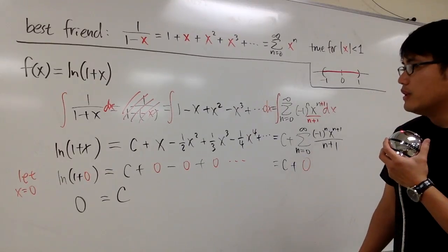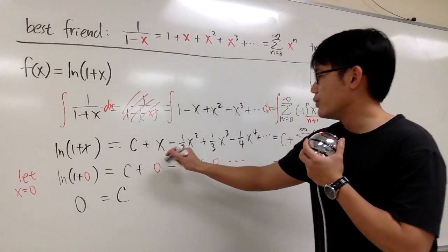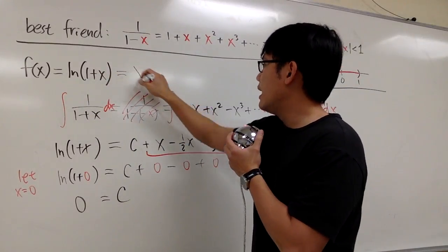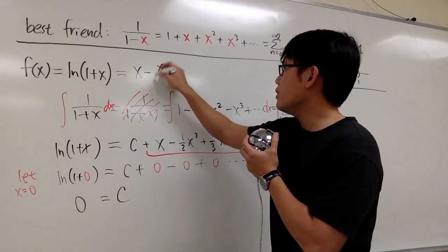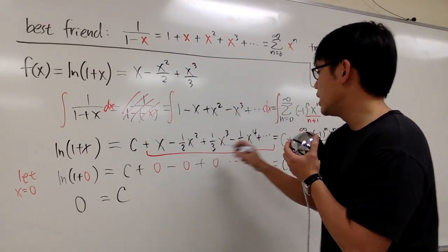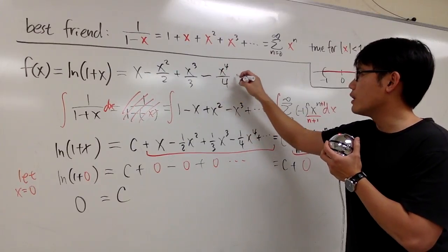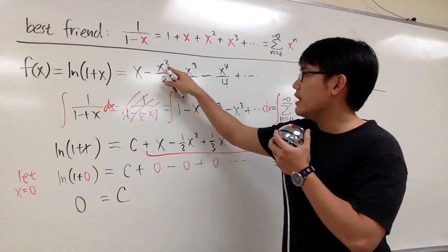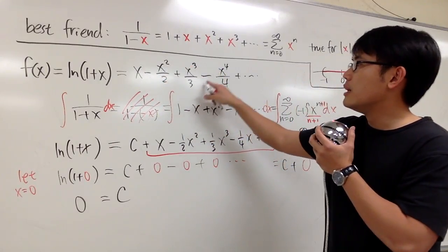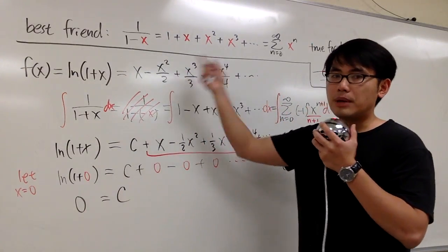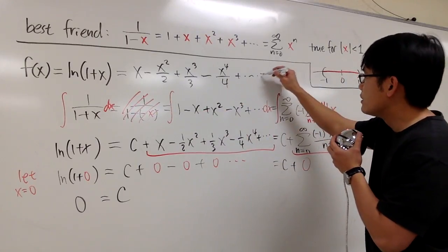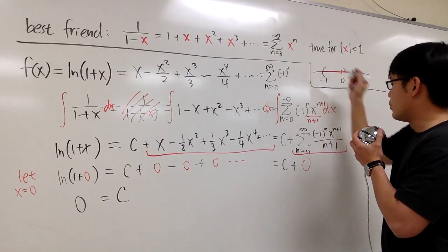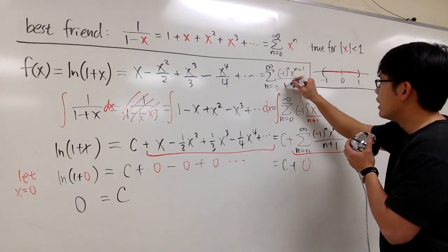Therefore, ln(1+x) equals x minus x squared over 2 plus x cubed over 3 minus x to the fourth over 4, and so on. You can see the pattern: alternating signs with x to the nth power divided by n. The sigma notation form is: sigma from n=0 to infinity of negative 1 to the nth power times x to the (n+1) over (n+1).